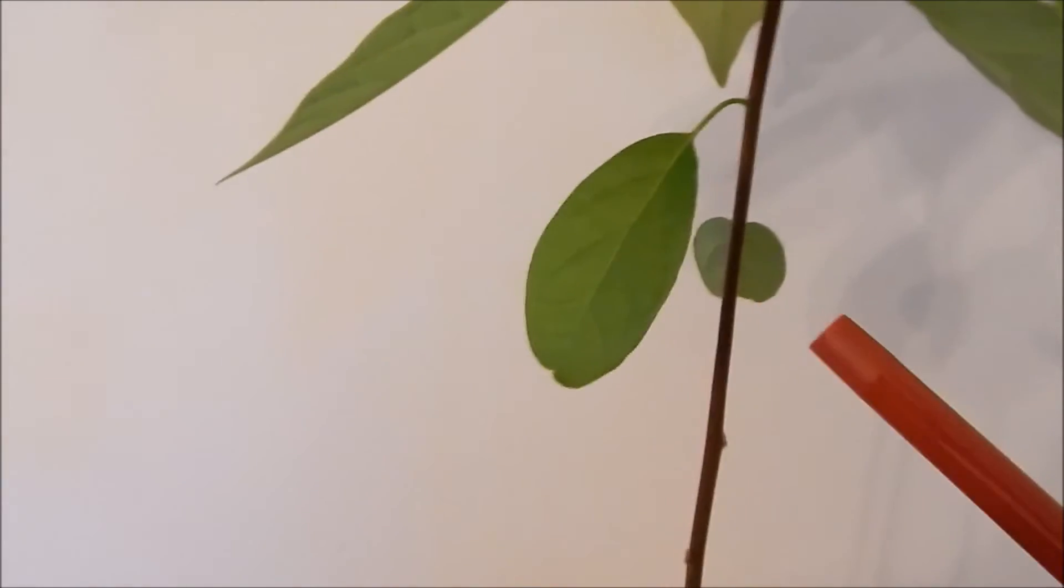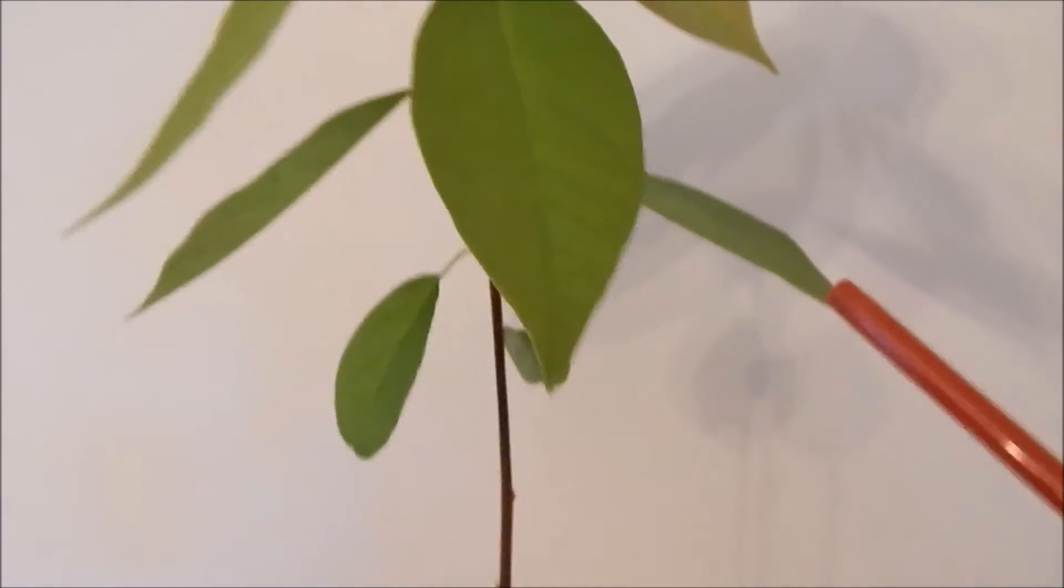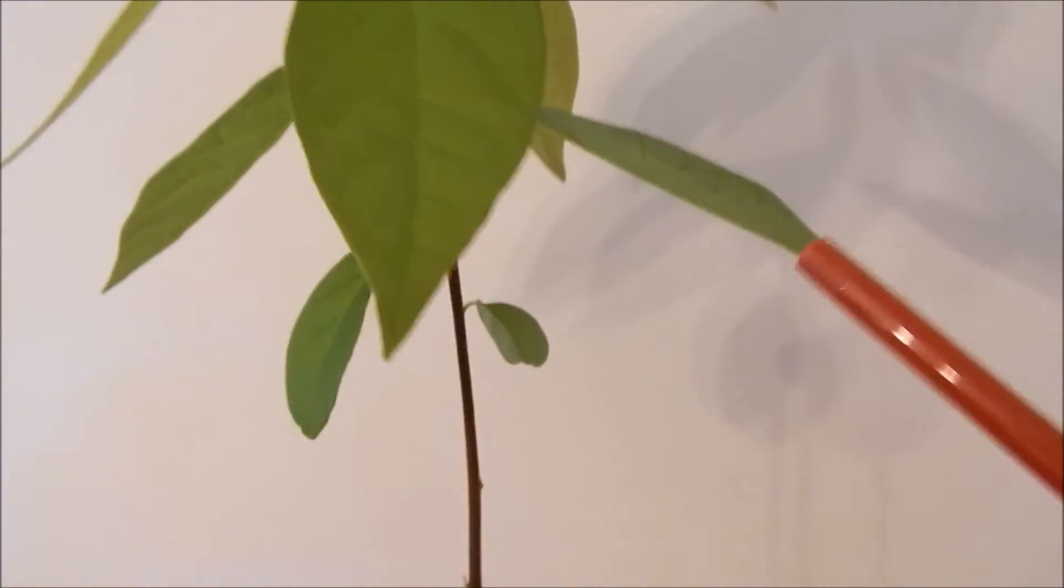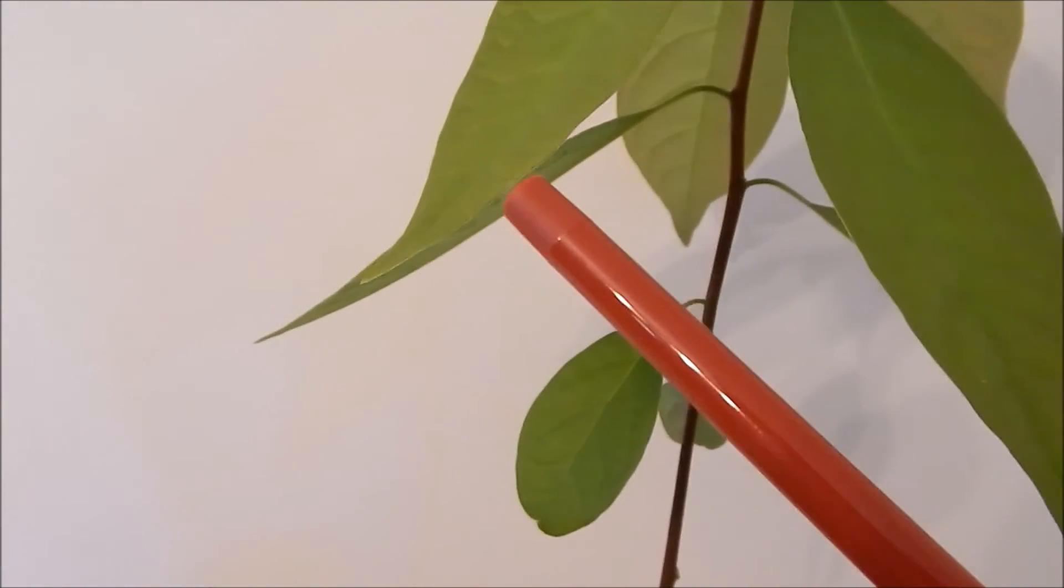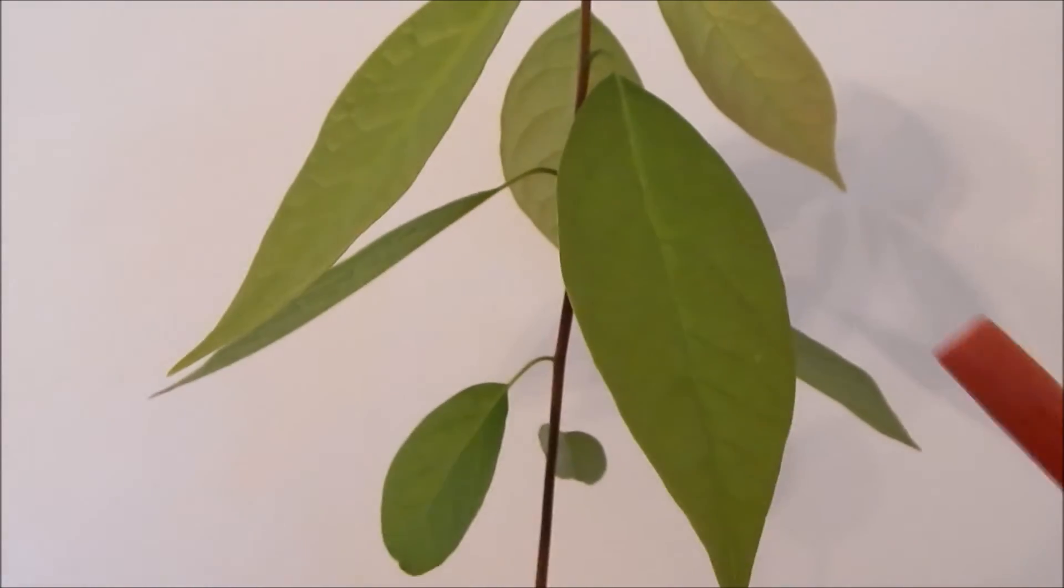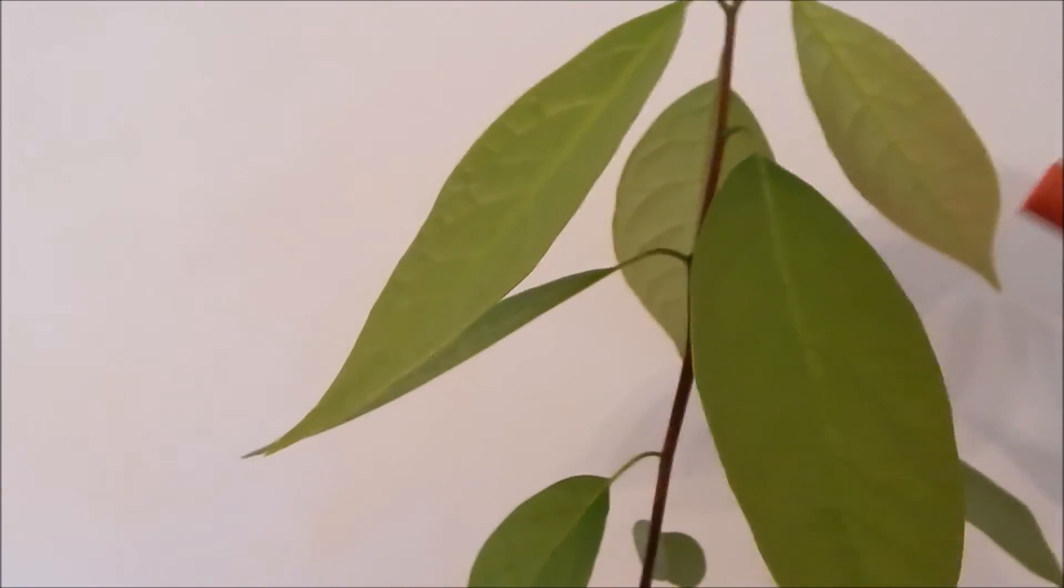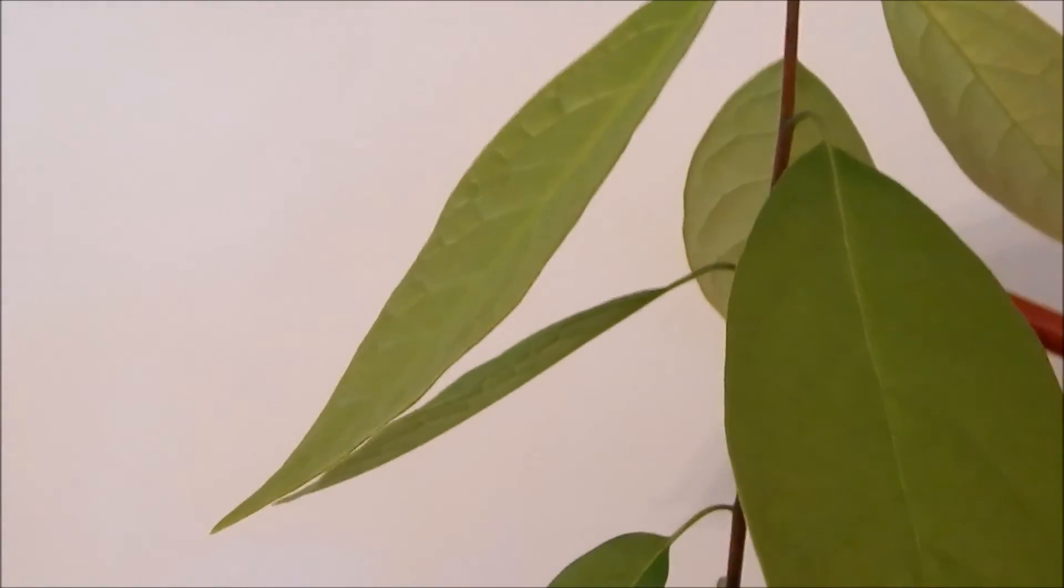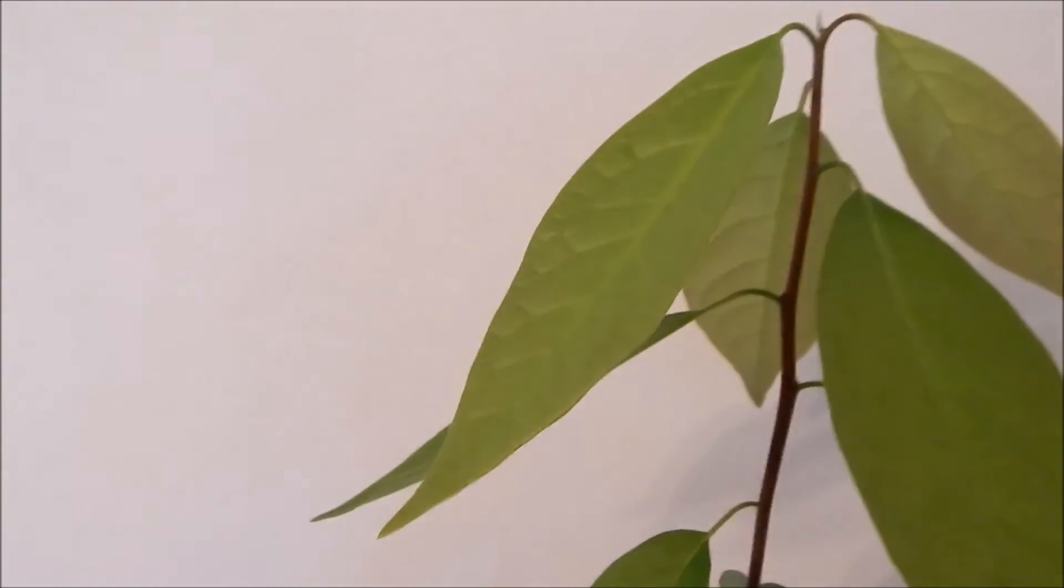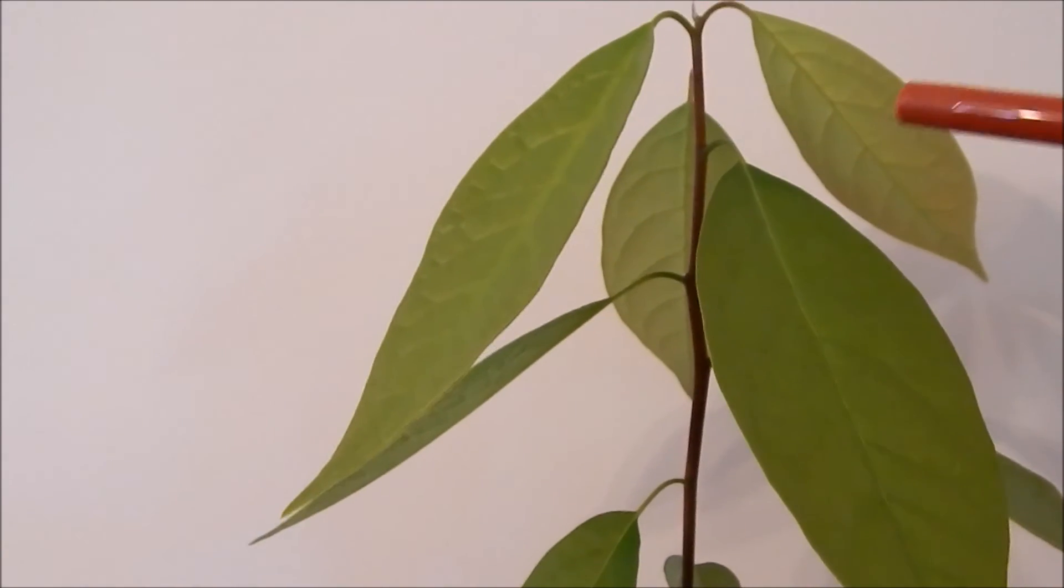The first leaf was the smallest one at 3 cm in length. The second leaf 5.6 cm, the third leaf 9.7 cm, the fourth leaf 11.5 cm, the fifth leaf 11.6 cm, the sixth leaf 12.5 cm, the seventh leaf 12.5 cm, and the eighth leaf 10.6 cm.